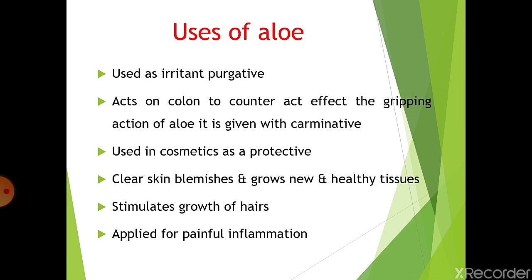Uses of aloe: it is used as an irritant purgative. It acts on the colon, and to counteract its gripping action, it is given with carminatives. It is used in cosmetics as a protective agent, clears skin blemishes, and promotes growth of new healthy tissue on the skin. It also stimulates hair growth and is applied for painful inflammation of the joints.